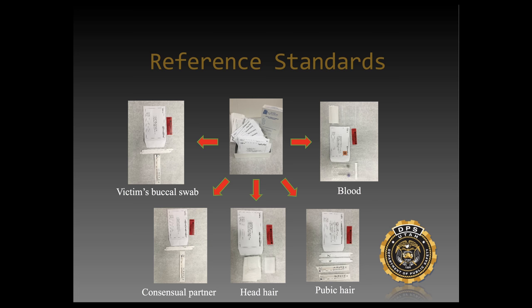Moving to head hair samples: we take those samples so that if we come across a foreign head hair anywhere on the victim's clothing, pubic area, or anywhere the SANE nurse examiner might see trace evidence — hair or fibers — we ask them to collect a comparison sample from the victim so we can distinguish it later. Since the victim is right there, we go ahead and collect it and have it for reference. The same idea applies to the pubic hair sample — collect those samples and keep them for reference comparisons later on.